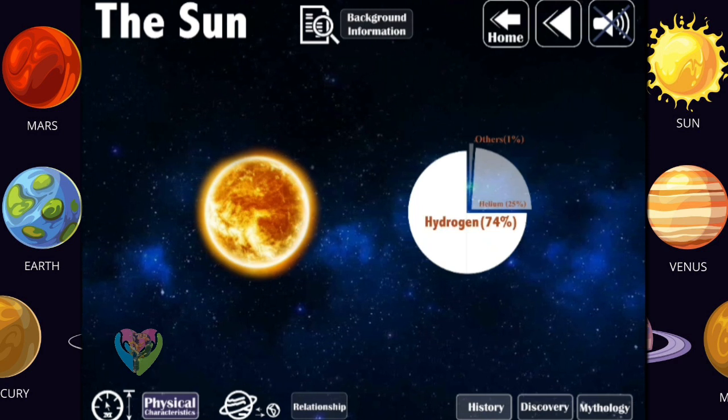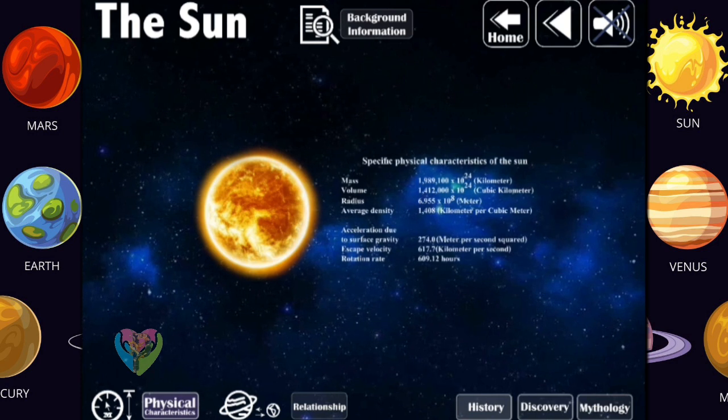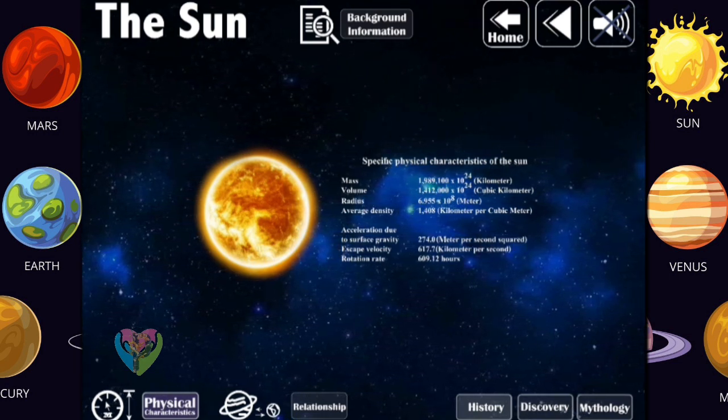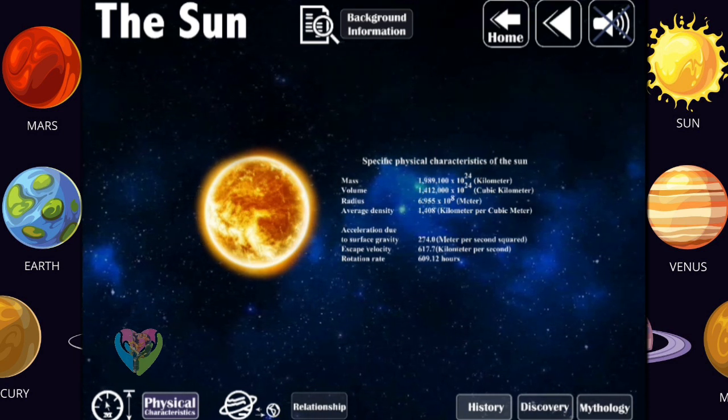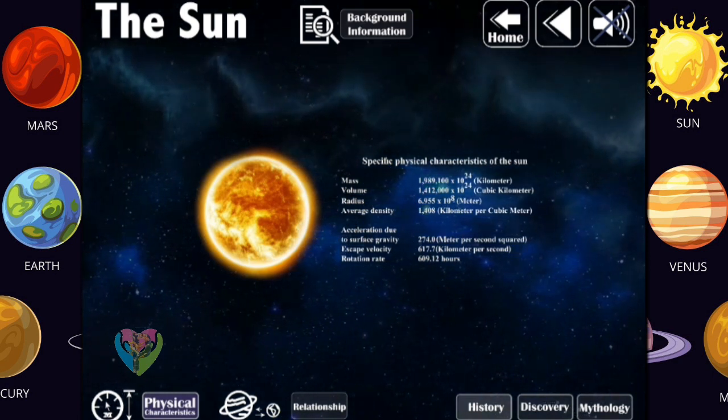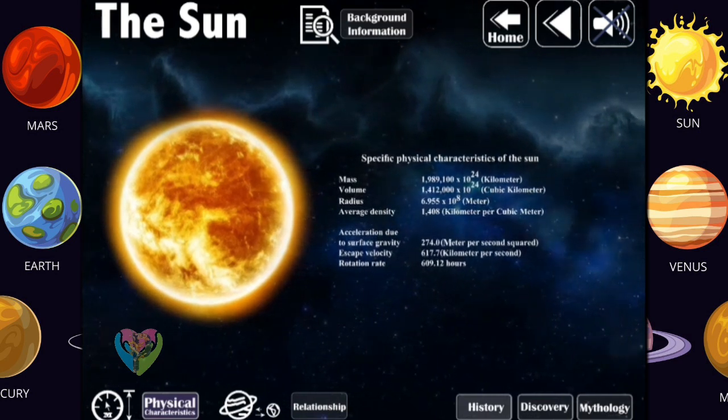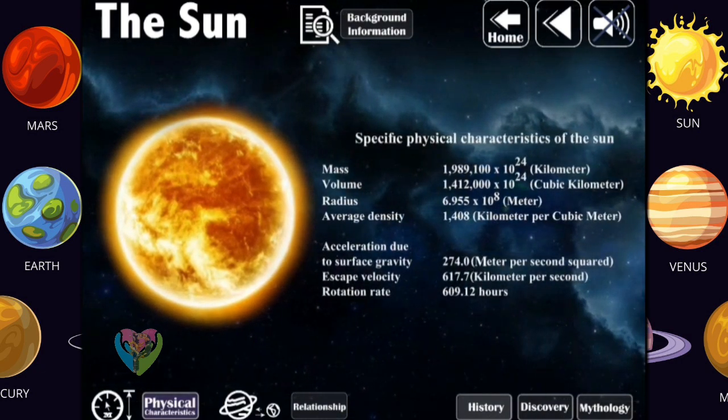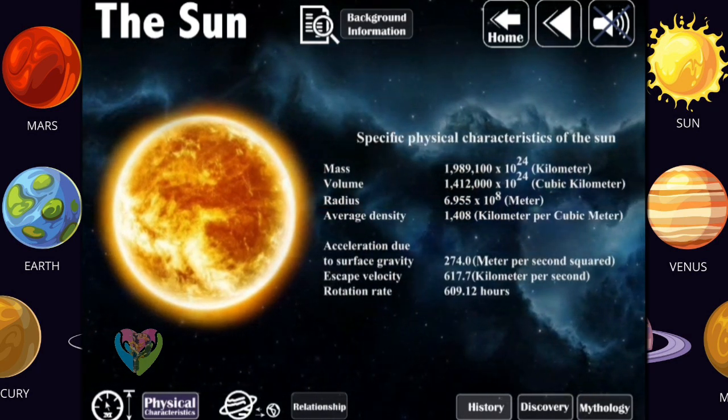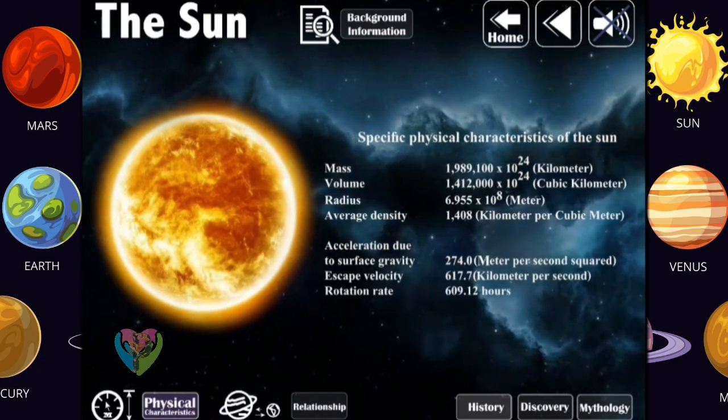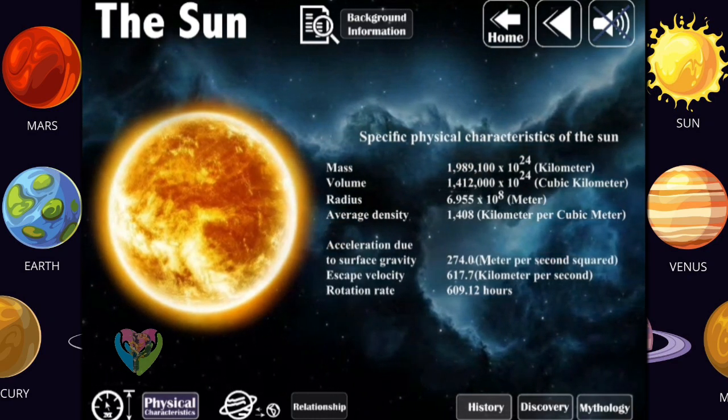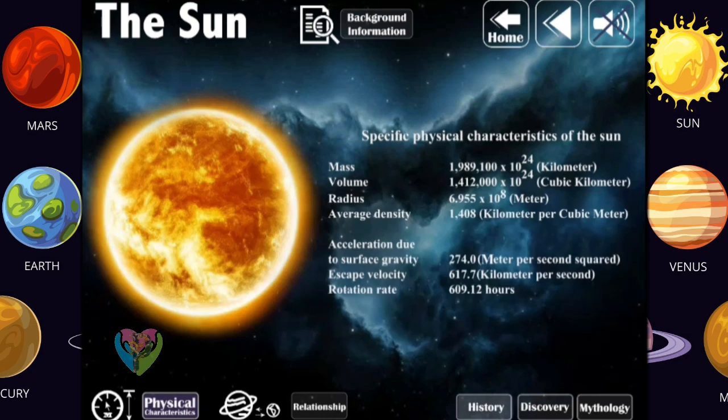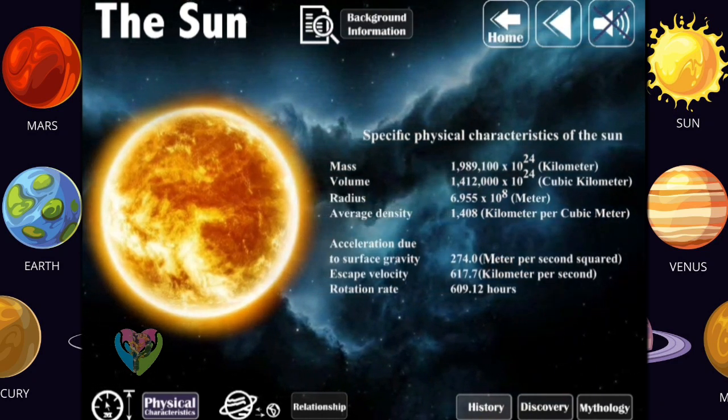Specific physical characteristics of the Sun: The mass is 1,989,100 times 10 to the 24th kilometers. The volume is 1,412,000 times 10 to the 24th cubic kilometers. And the radius is 6.955 times 10 to the 8 meters. Average density is 1,408 kilometers per cubic meter. The acceleration due to surface gravity is 274 meters per second squared. The escape velocity is 617.7 kilometers per second. And the rotation rate is 609.12 hours.